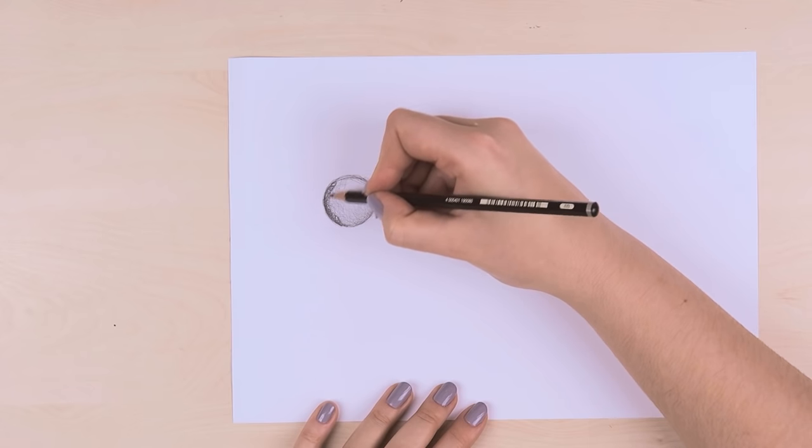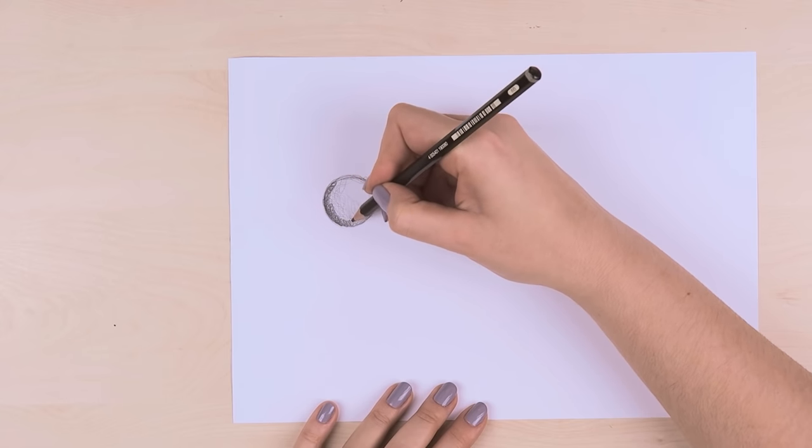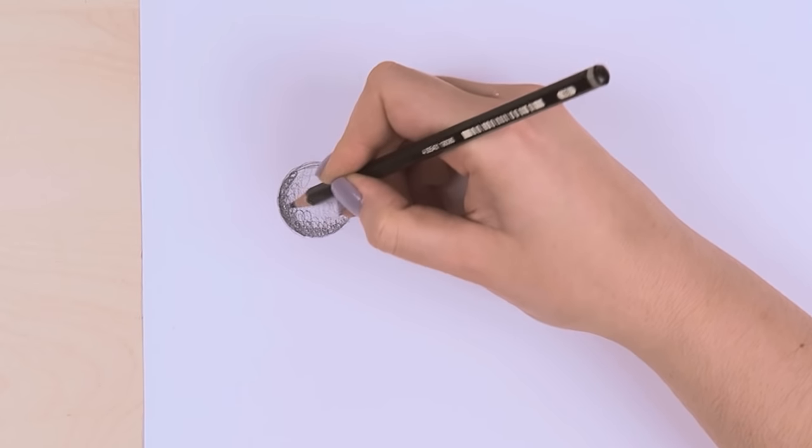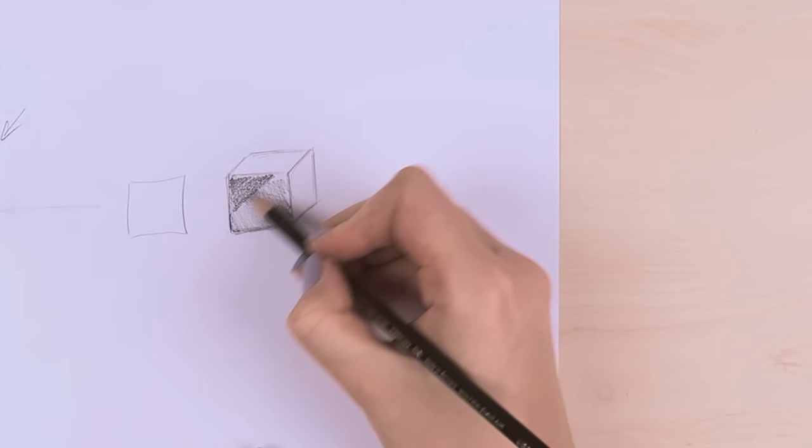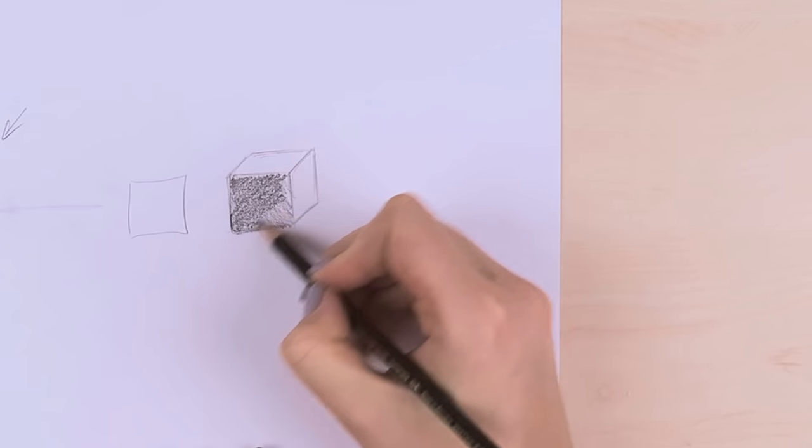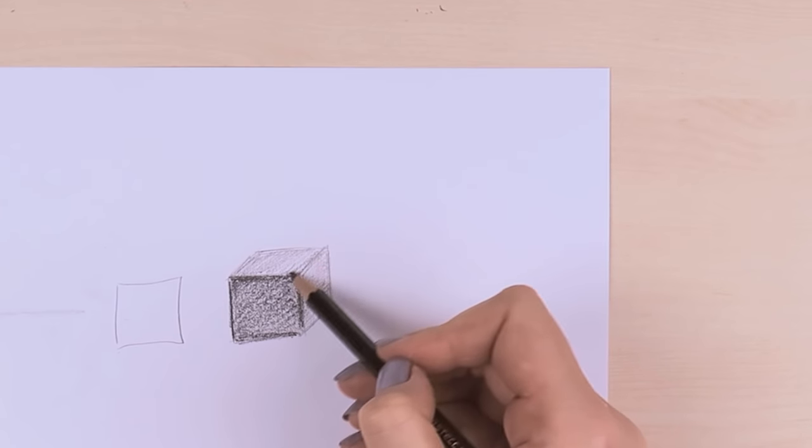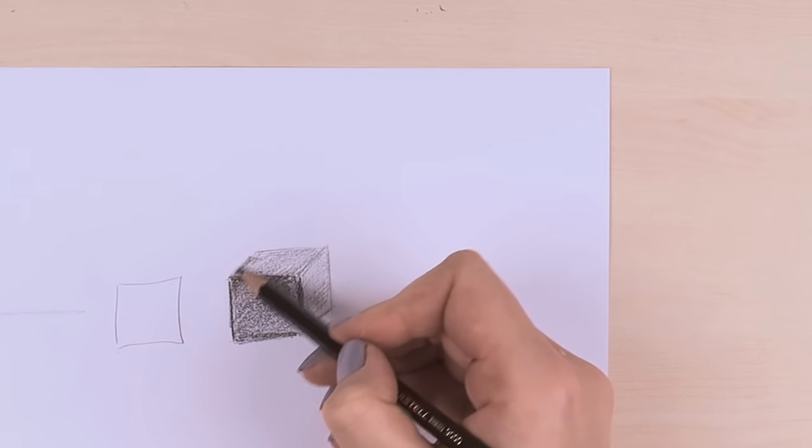So start at the darkest spot that gets the least amount of light. And then blend it out to the brighter areas by using any of the shading techniques I showed you. If you draw something that is square, you don't want to use curved lines for shading. Rather, follow the shape of the object while shading it.